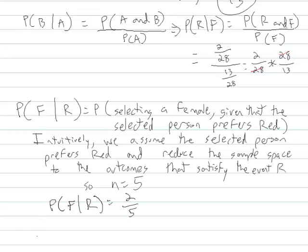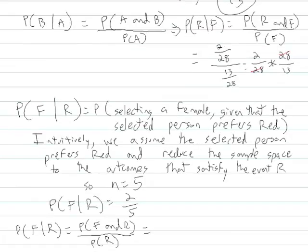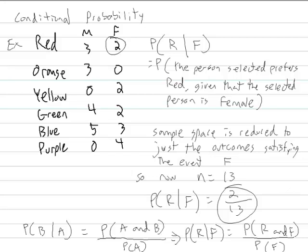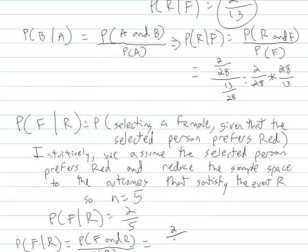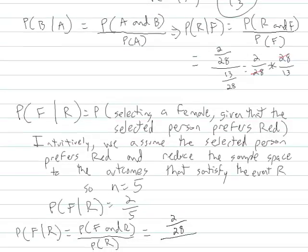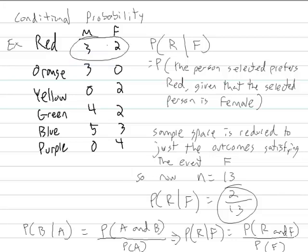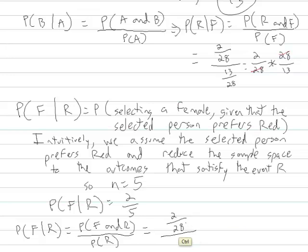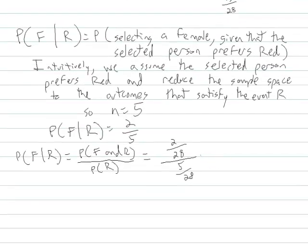Of those 5 outcomes that satisfy the event R, how many would successfully be female? Just 2. So the probability of female given R equals 2 out of 5. Formally, P of F given R equals P of F and R divided by P of R. There are 2 ways of successfully having someone who is female and prefers red out of 28, divided by 5 people out of 28 who prefer red. The 28s cancel out, and we again get 2 out of 5.